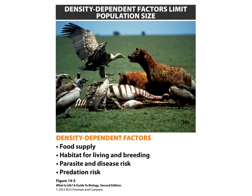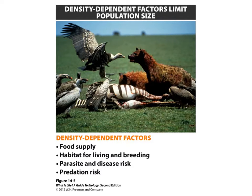Density-dependent factors include things like food supply, habitat for living and breeding, parasites and diseases, and predation risk. All of these are affected by how many organisms are in the population or how dense it is. As the population becomes more dense, food becomes more scarce, space is limited, and the risk of parasites and disease goes up because you are in close contact with neighbors and can easily spread these things.